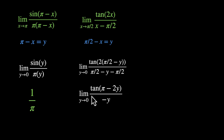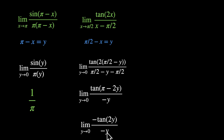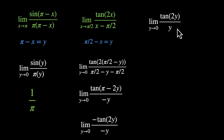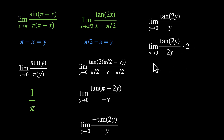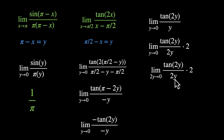We can use the identity: tan(π - θ) = -tan(θ). So this becomes limit y approaches 0, -tan(2y) / (-y). Cancelling the negative sign, we have limit y approaches 0, tan(2y) / y. Now we need the variables to match. Limit y approaches 0, tan(2y) / 2y, multiplied by 2. When y approaches 0, double of it also approaches 0. So limit 2y approaches 0, tan(2y) / 2y, times 2. This becomes 1. So the answer is 1 times 2 = 2.